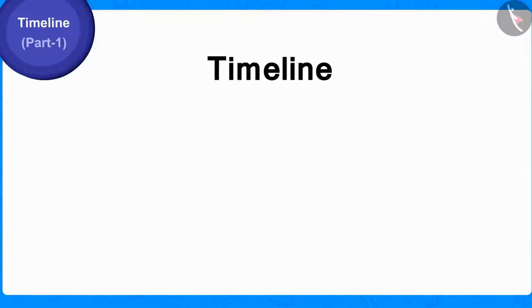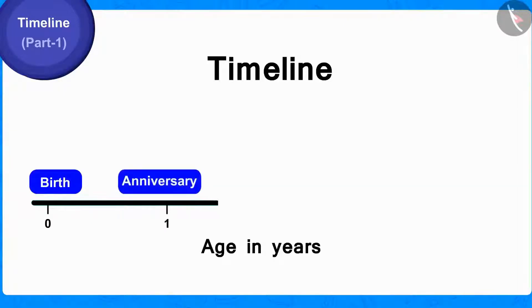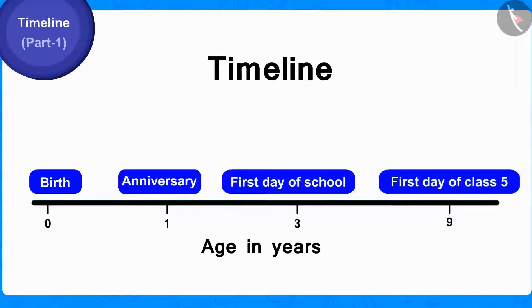A timeline is a line on which we can depict the events that have happened in the life of any person in order of chronology.